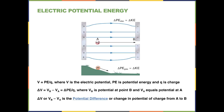This difference in potential is called the potential difference, and it represents the change in potential of a charge when it moves from A to B. You've probably heard the term potential difference before. Potential difference has a unit of volts, and one volt is equal to one joule — joule being a unit of energy — divided by one coulomb, being a unit of charge.